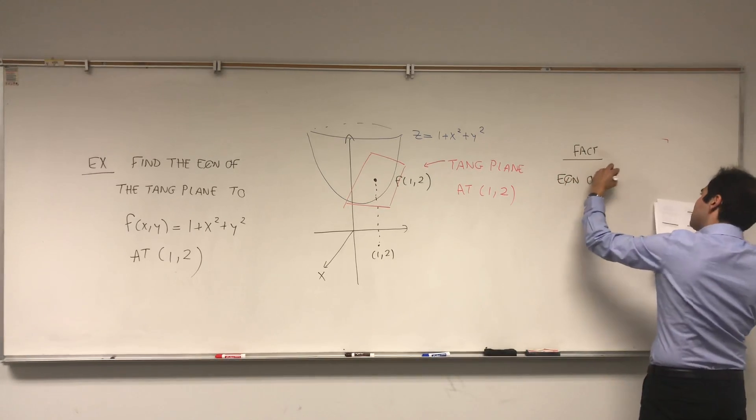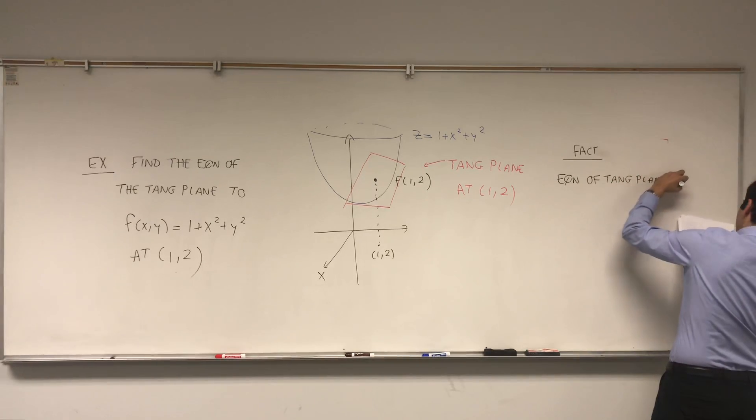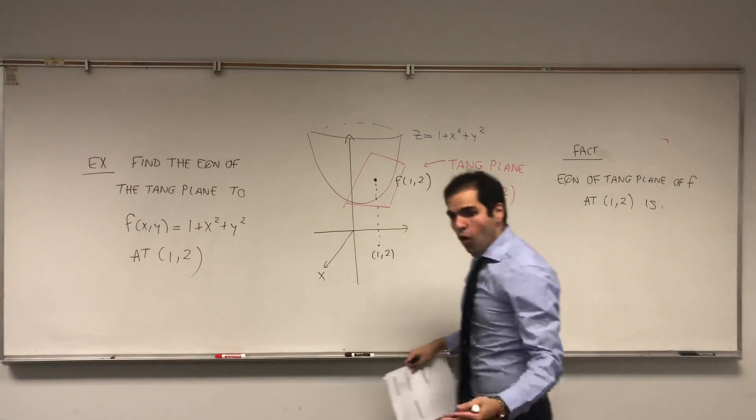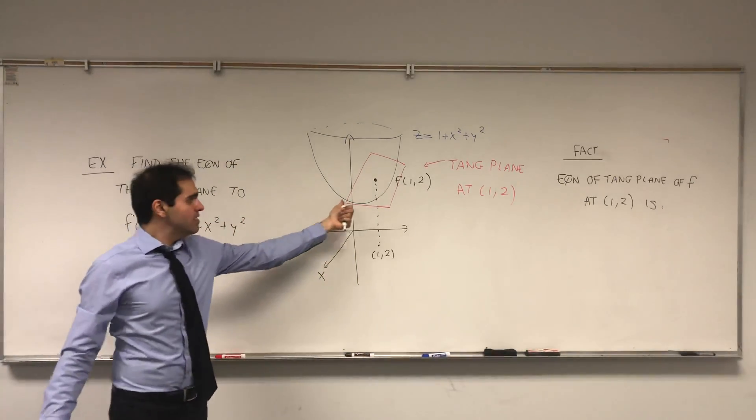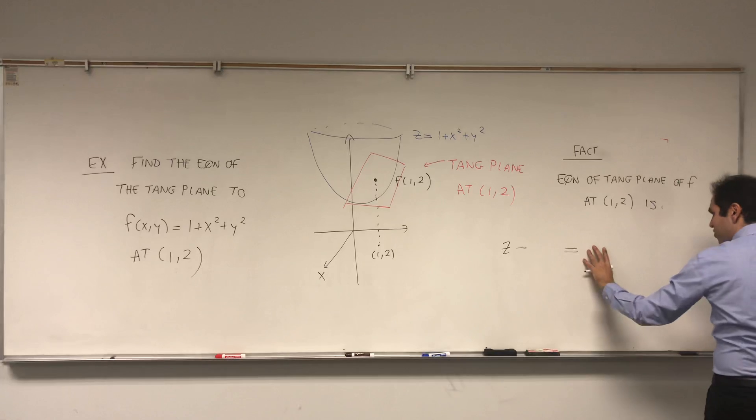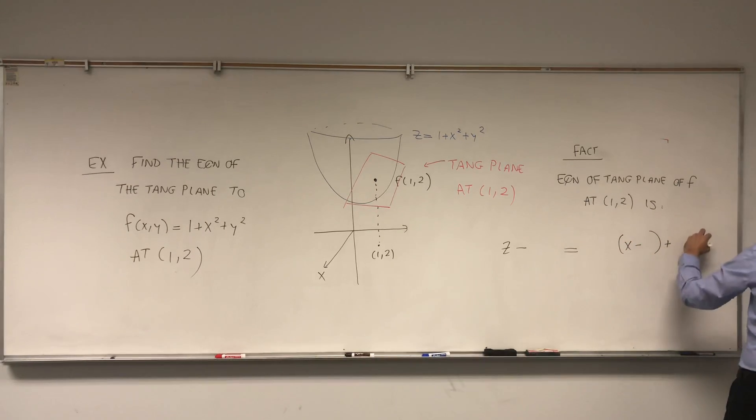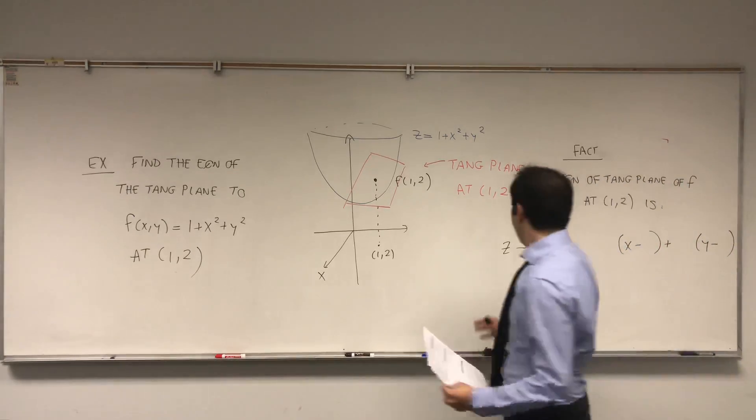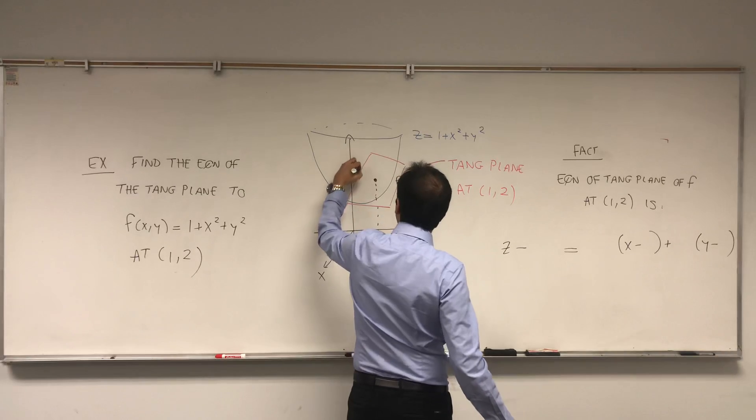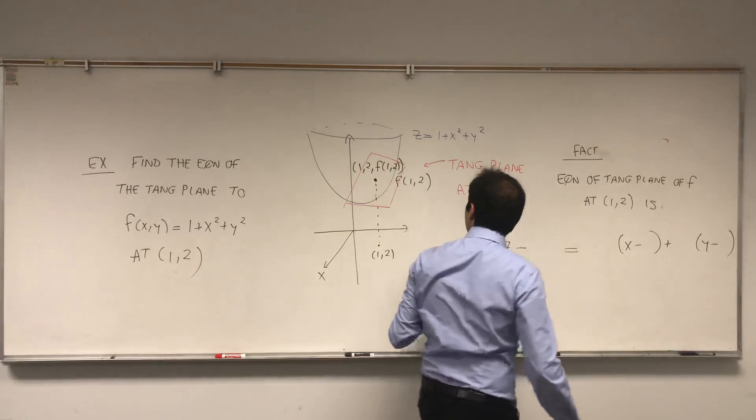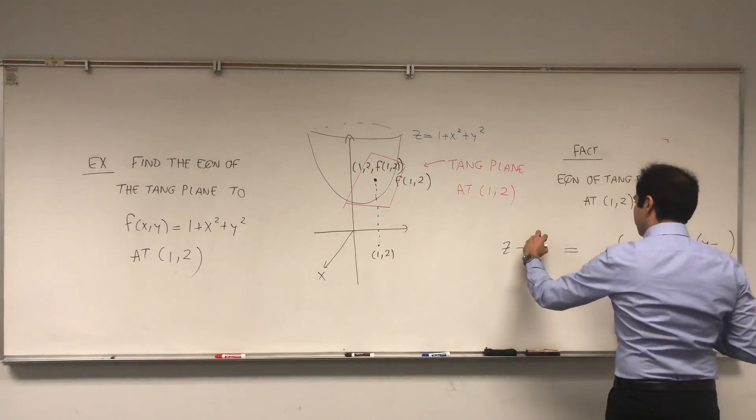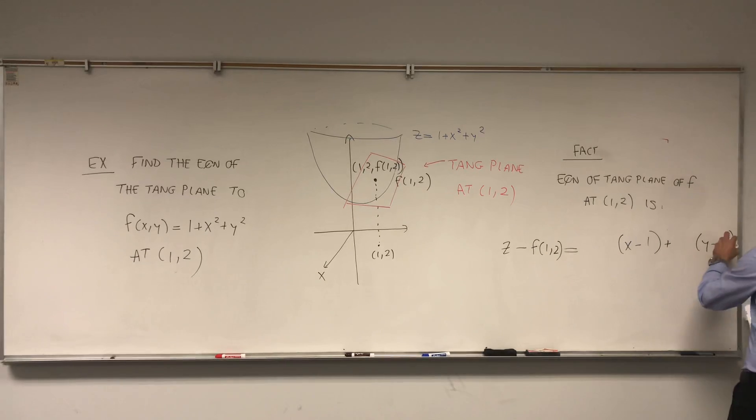So here's the fact: the equation of the tangent plane of f at the point (1,2) is as follows. Before, we had y equals something because we had a line. But this time, because we have a plane, it's z minus something equals something times x minus something plus something times y minus something. Now, let's figure out how to fill in the blanks. First of all, the tangent plane has to go through the point (1, 2, f(1,2)). That's why we need z minus f(1,2) equals something times (x - 1) plus (y - 2).